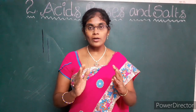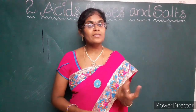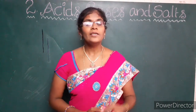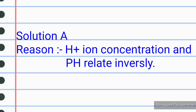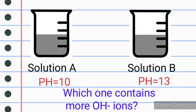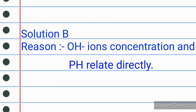Let me ask some questions based on this information. Question 1: pH of solution A is 4 and pH of solution B is 5. Which solution contains more H+ ions? Solution A, because H+ ion concentration and pH relate inversely. Question 2: pH of solution A is 10 and pH of solution B is 13. Which solution contains more OH⁻ ions? Solution B, because OH⁻ ion concentration and pH relate directly.